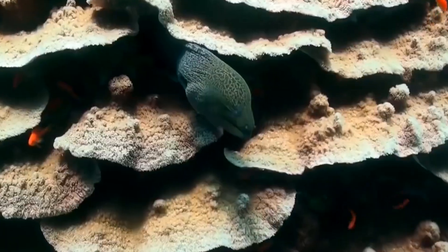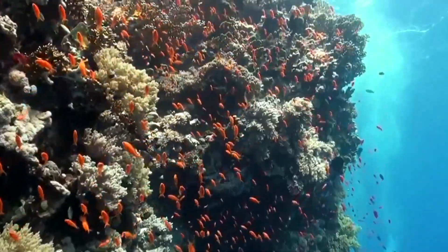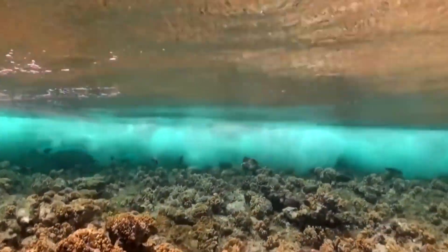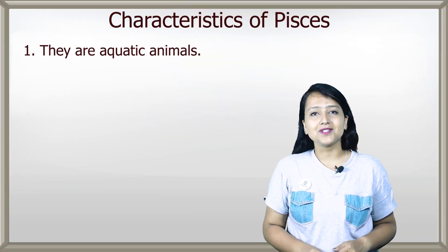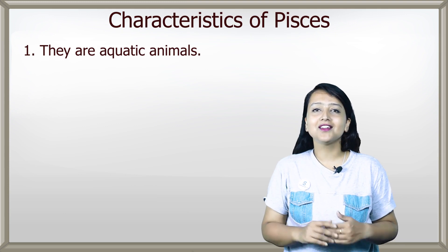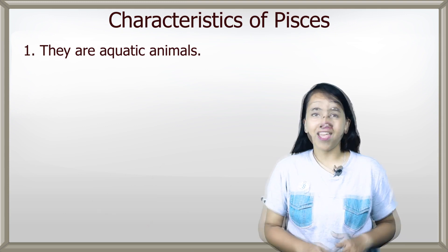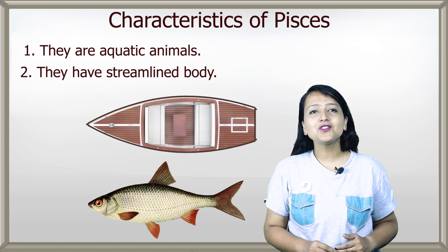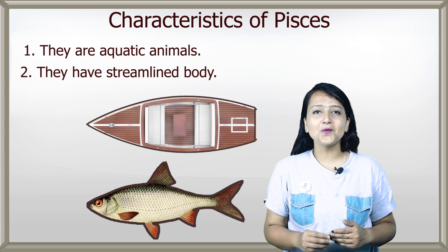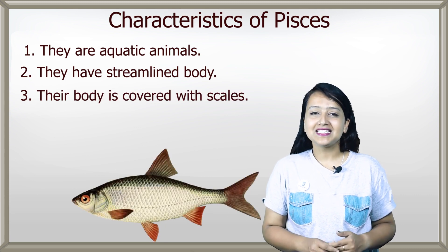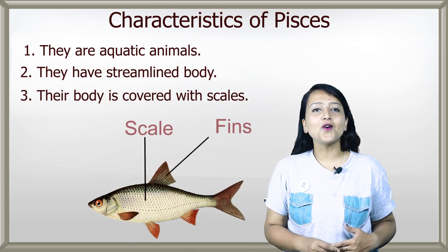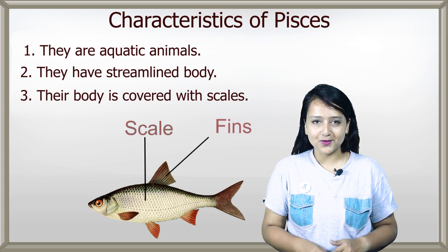Firstly, let's explain Pisces. All kinds of fish fall in this class. Fish lives in water. Fishes are of different shapes and sizes — some are big whereas some are small. Some characteristics of this class: they are aquatic animals that live in lakes, ponds, rivers, seas, etc. They have a streamlined body, that means a boat-shaped body, which helps them to cut the water current while swimming. The body is covered with scales. They have fins in different parts of their body to help them swim in water.